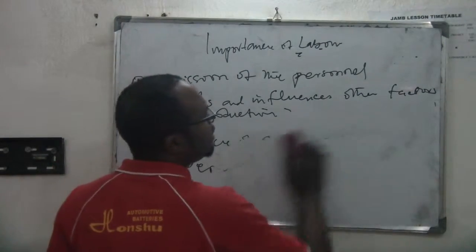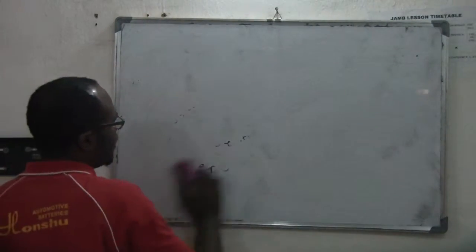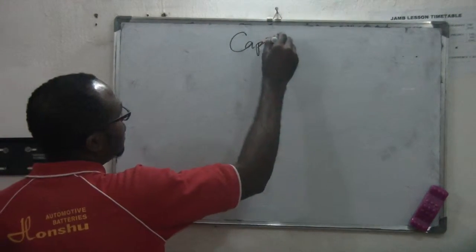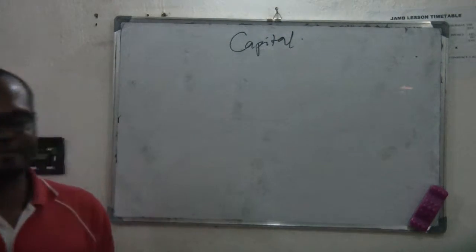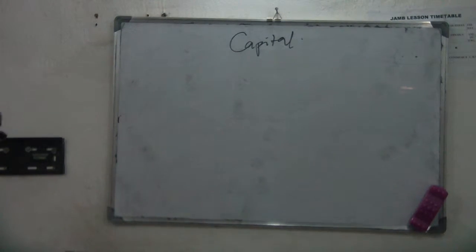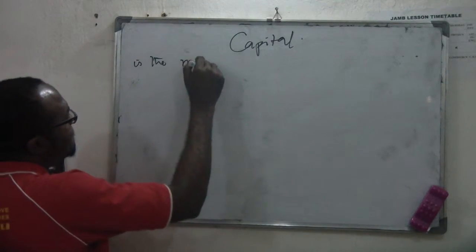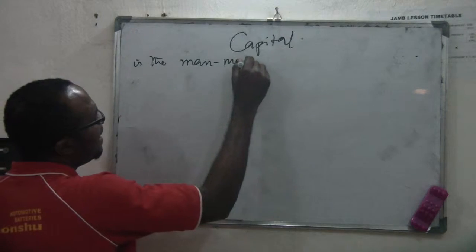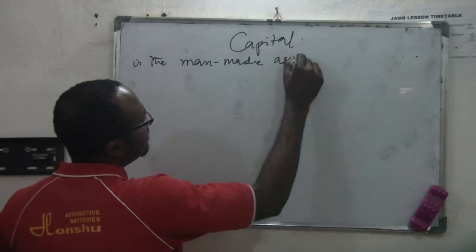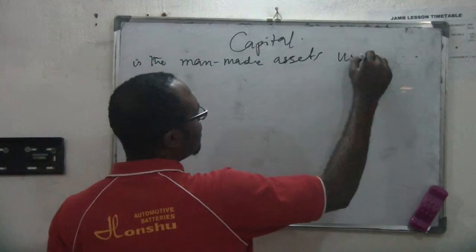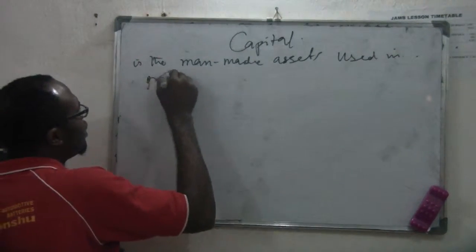We look at the third factor of production. And the third factor of production is capital. What is capital? Capital is the third factor of production, and it is defined as the man-made assets used in production.